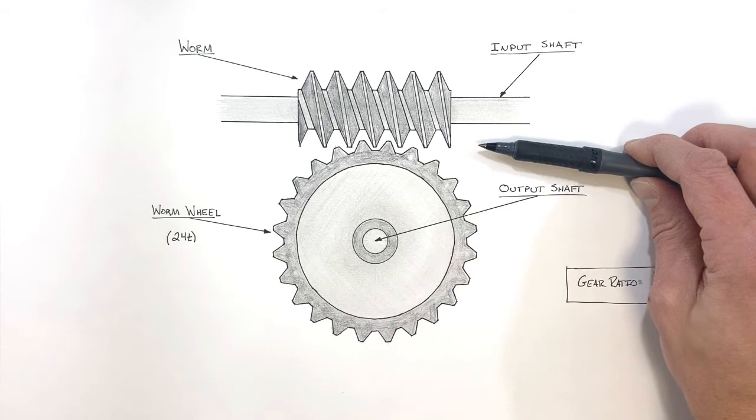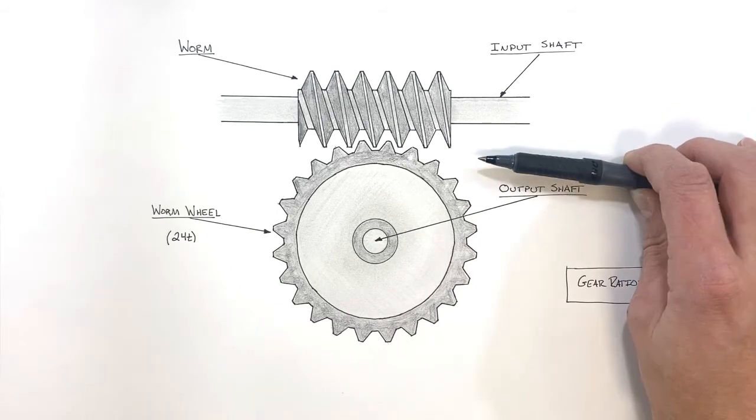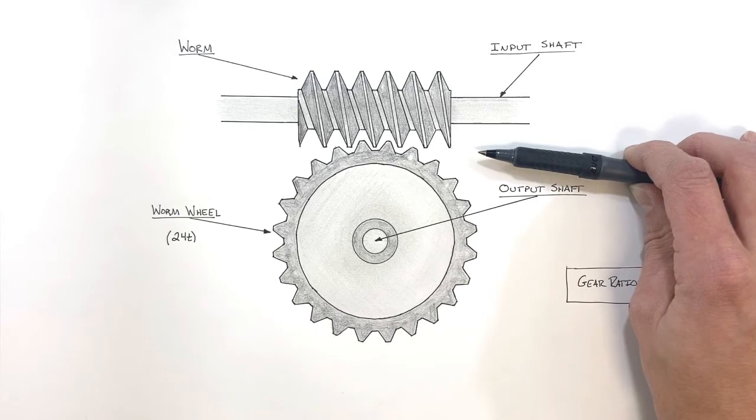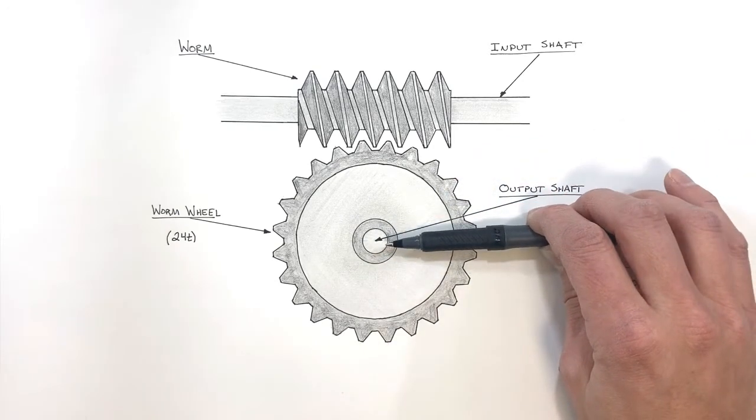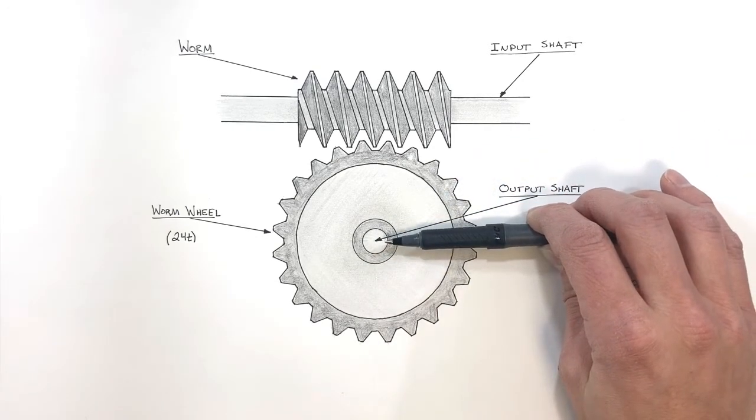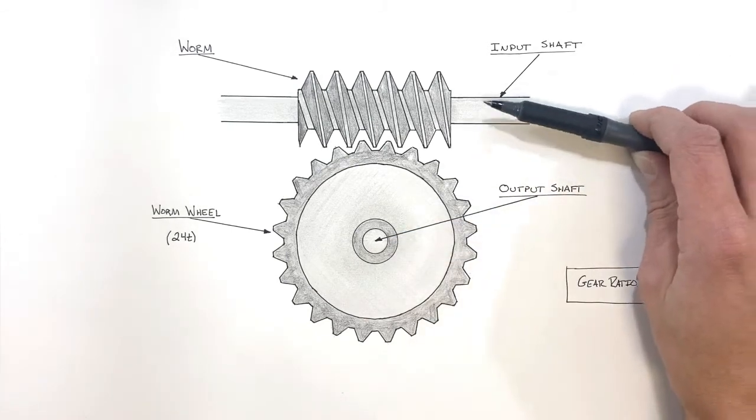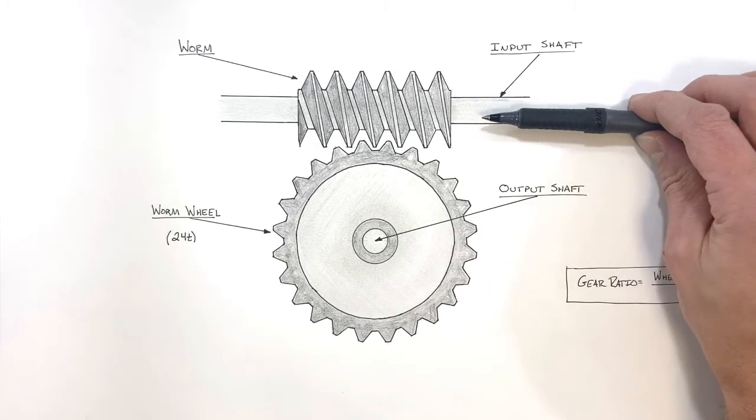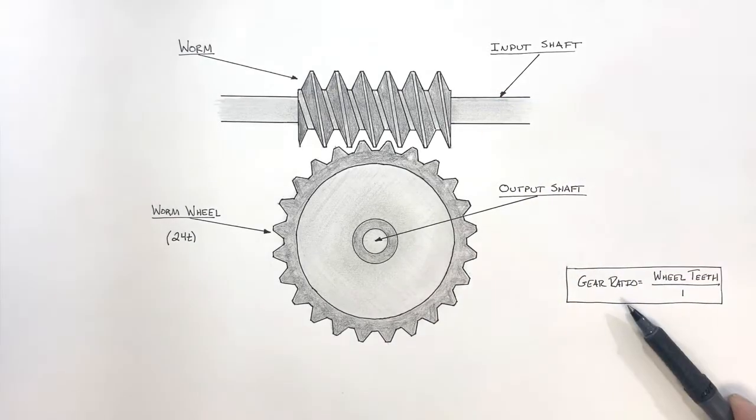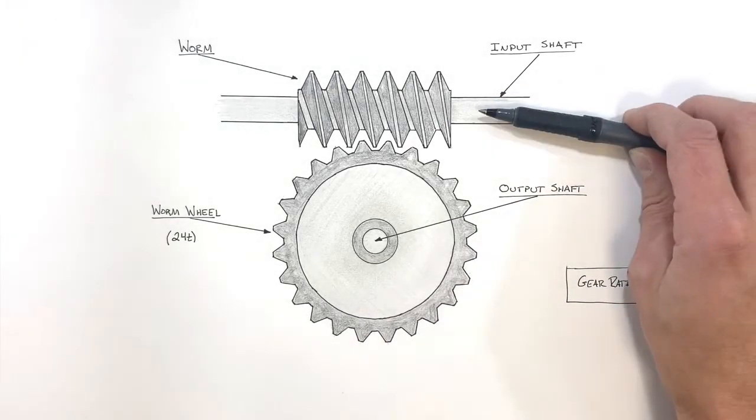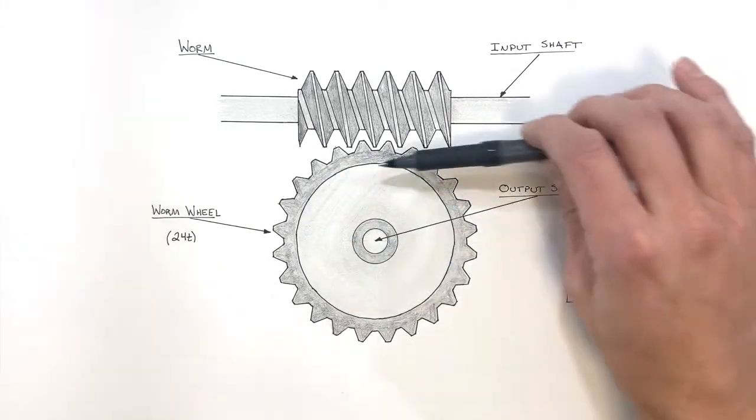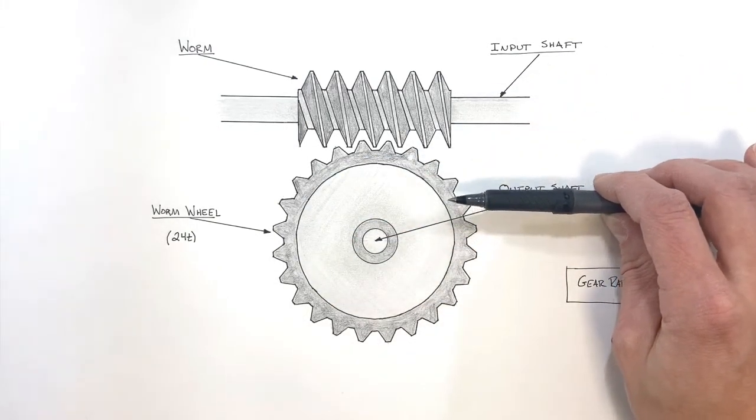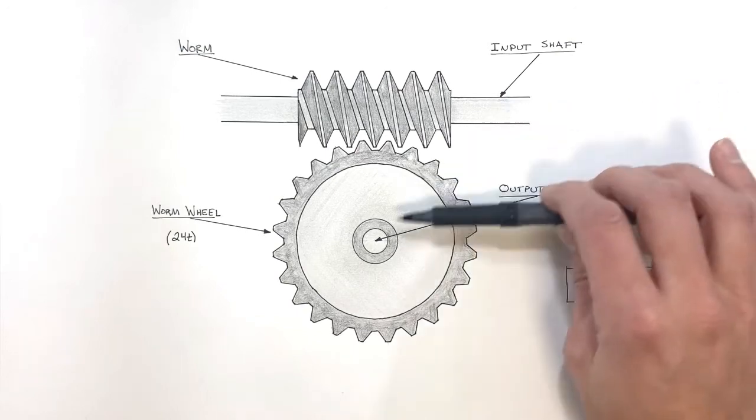In practice, a worm gear assembly is a great tool to use in certain situations. If we need a lot of torque on an output shaft, this is a great way to do that. The input shaft has to rotate a huge number of times given this gear ratio, but it's going to produce an enormous torque. Ultimately, we're trading in rotations for torque.